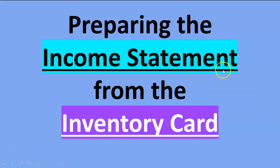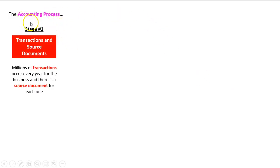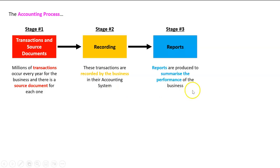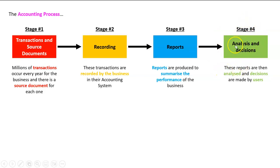How can we prepare the income statement from the inventory card? The income statement is actually our next topic, so let's put it in perspective. We've got our accounting process: stage one is that millions of transactions occur every year and there should be a source document; stage two is we record all of those in the general journal, ledgers, and inventory cards; step three is what our next topic is about — we prepare reports to summarize the performance of the business.